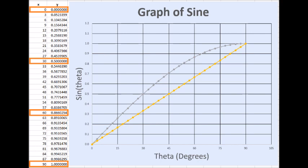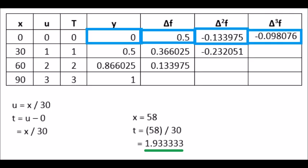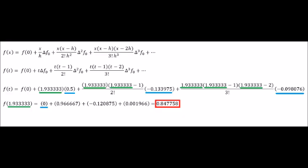I'll have to pull four equally spaced data points from theta equals 0, 30, 60, and 90 degrees in order to compare Excel's cubic fit. This forward difference table is a result of that. x equals 58 degrees is transformed into t equals 1.93333 repeating. Here you can see where I plug in the numbers. Our final answer is 0.847758.